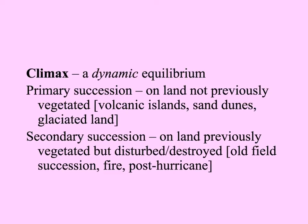But a climax isn't really unchanging. It turns out that climaxes are dynamic equilibria. There are two kinds of succession: primary succession, on land not previously vegetated, and secondary succession, on land that was previously vegetated but disturbed or destroyed, leaving some remnants of life behind.